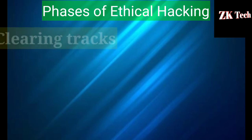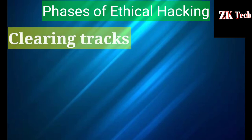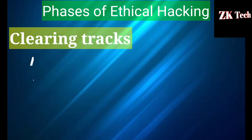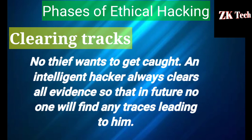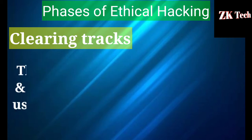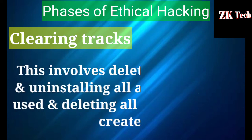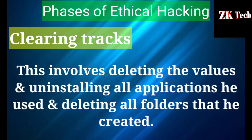The fifth phase of ethical hacking is clearing tracks. No attacker wants to get caught. An intelligent hacker always clears all evidence so that in future no one will find any tracks leading to him. This involves modifying or deleting logs, uninstalling all applications he used, and deleting all folders that he created.